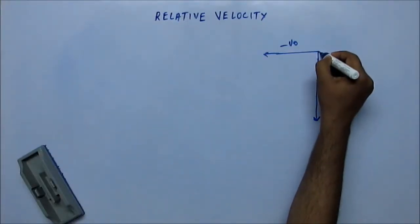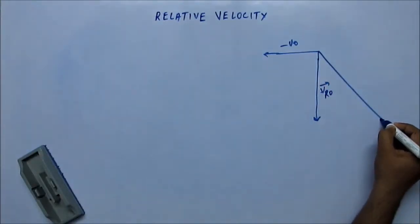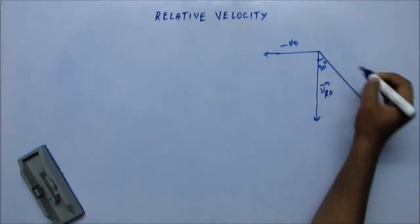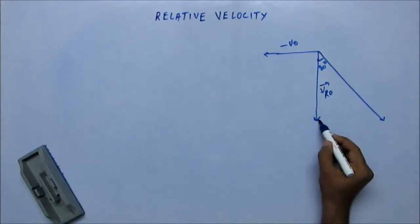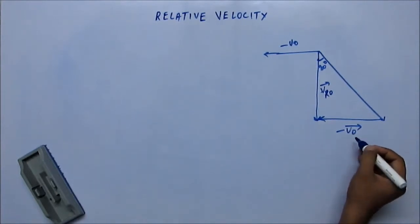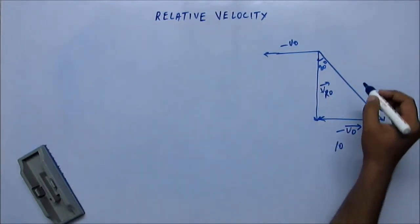The velocity of rain with respect to ground is making an angle of 30 degrees with respect to vertical. Shifting VO here, minus VO vector, this we know is 10 km per hour.